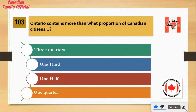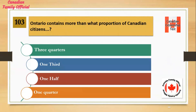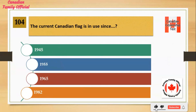Ontario contains more than what proportion of Canadian citizens? Number 1: 3 quarters. Number 2: 1 third. Number 3: 1 half. Number 4: 1 quarter. And the answer is 1 third.